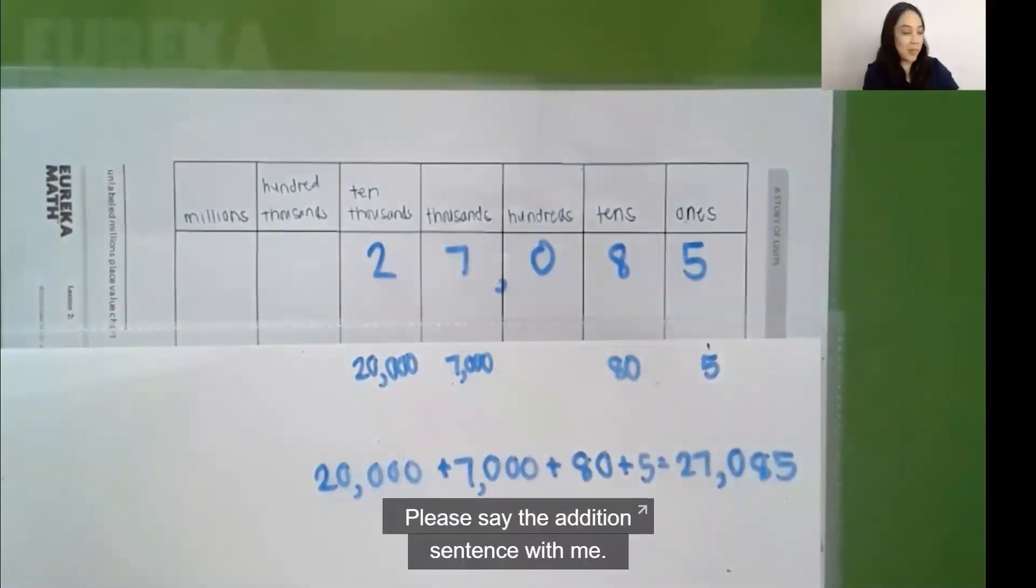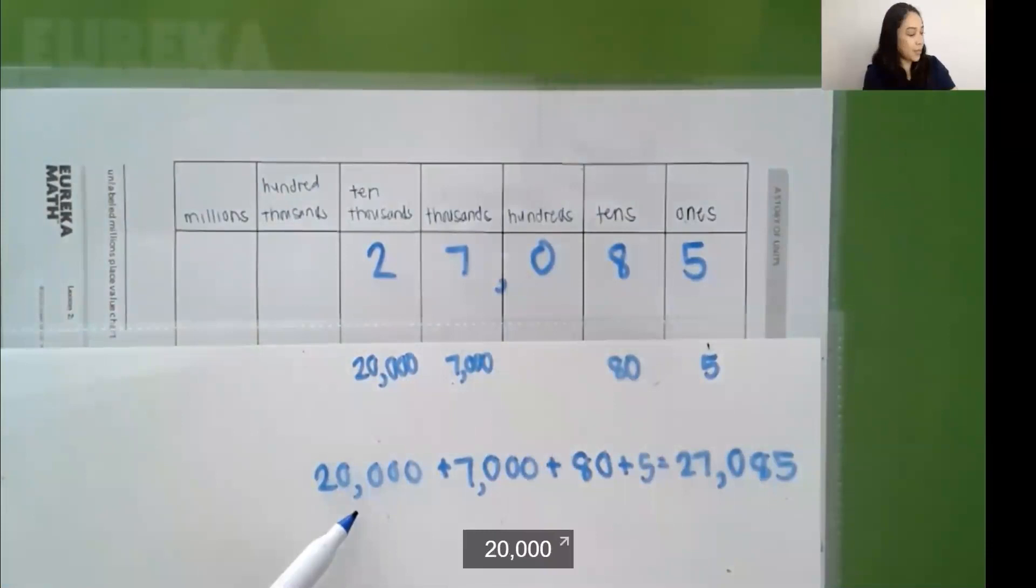Please say the addition sentence with me. 20,000 plus 7,000 plus 80 plus 5 equals 27,085.